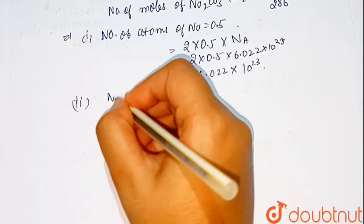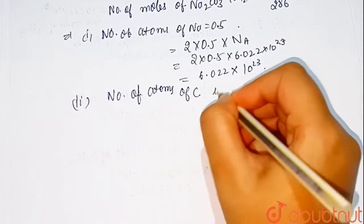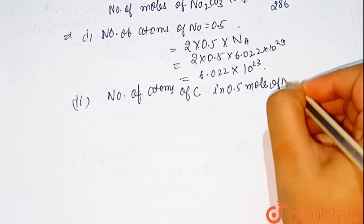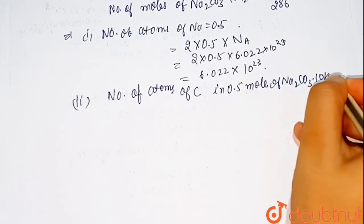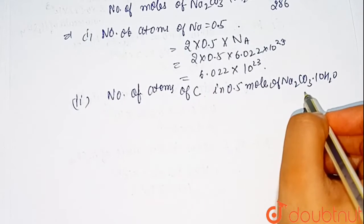Now, second is carbon. Number of atoms of carbon in 0.5 mole of NA2CO3.10H2O. As we see that there is one carbon atom present.